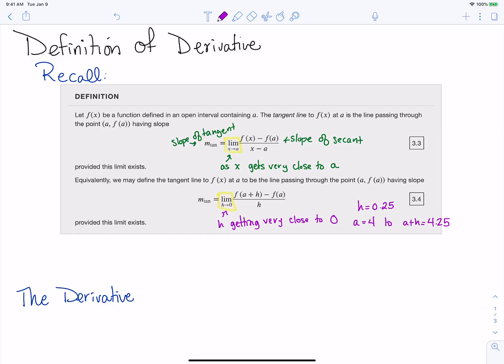That's just another way to talk about that second point we're using to find our secant line. Saying that h is getting close to zero is basically saying the same thing as in the first definition—that the second point is getting really close to a, and our slope of the secant line gets really close to the slope of the tangent line.